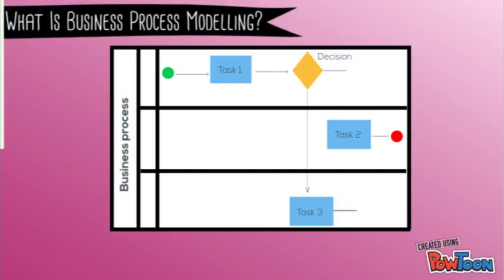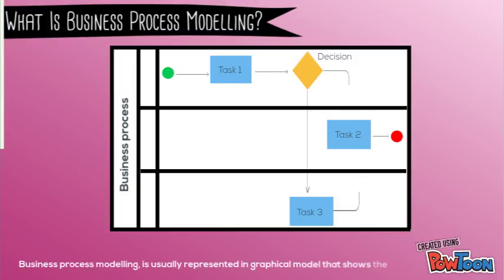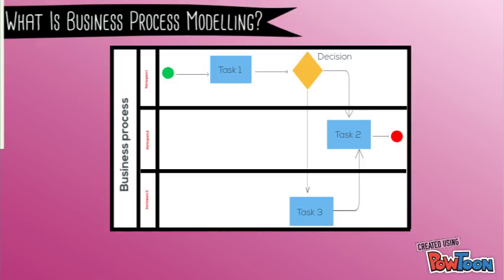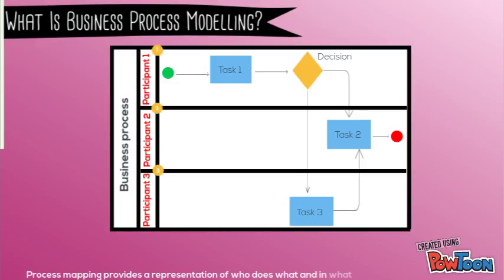Business Process Modeling is usually represented in a graphical model that shows the processes and the relationships between them using process models. Process Mapping provides a representation of who does what and in what order.